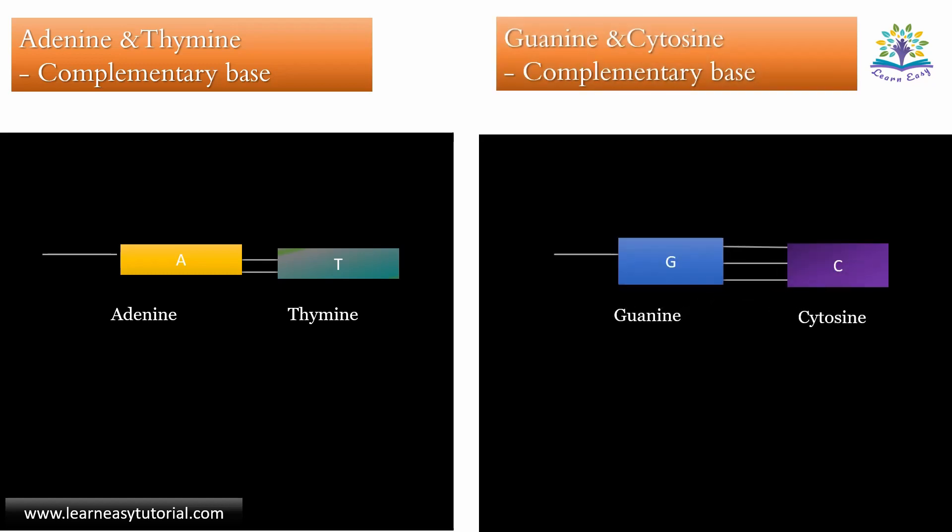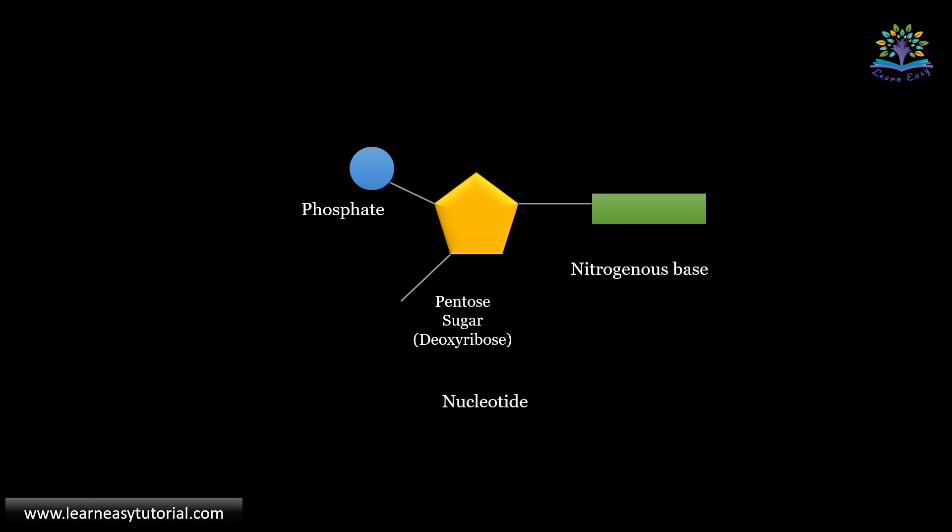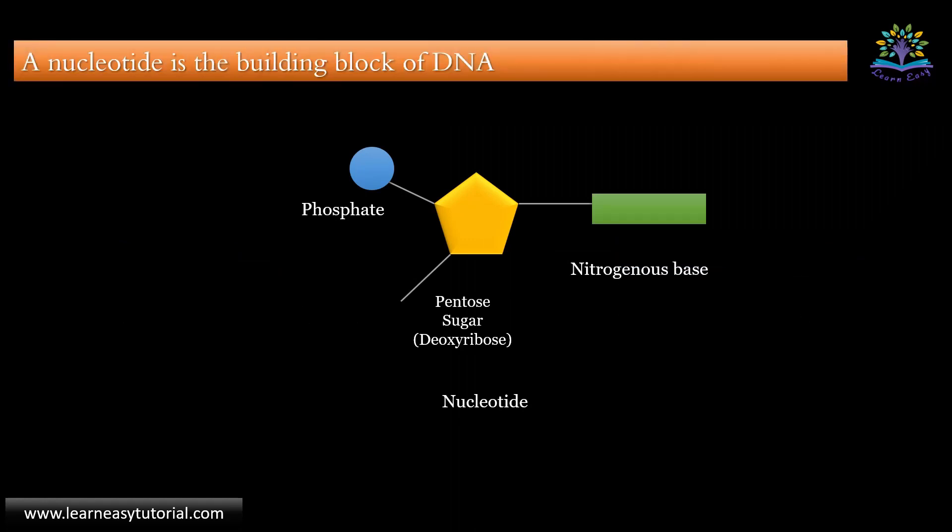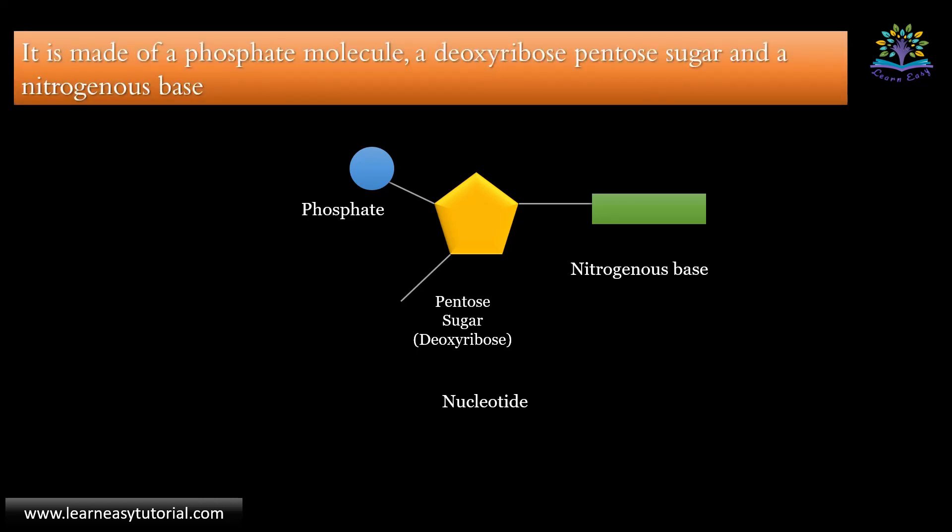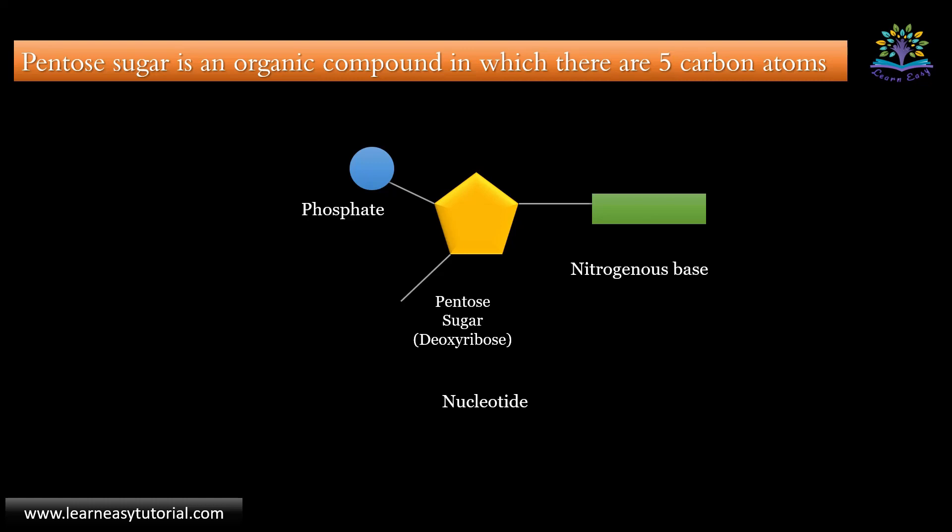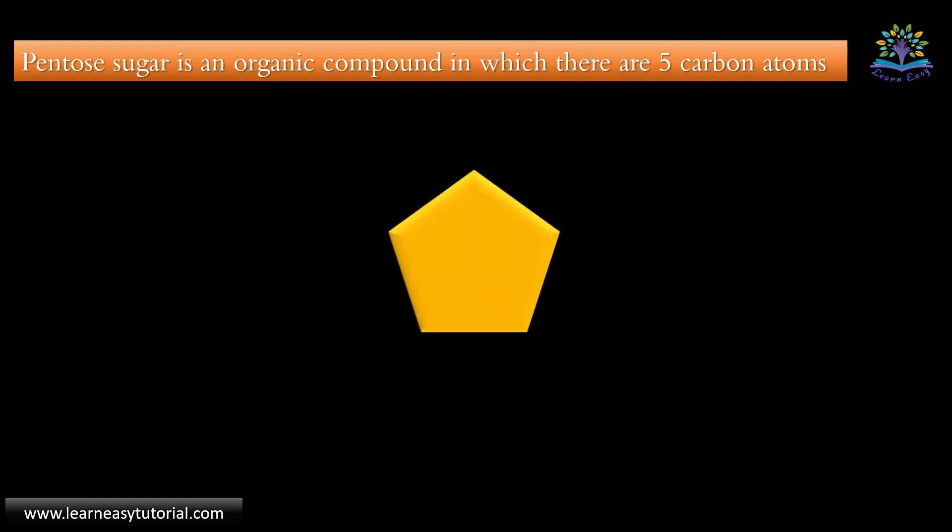We know that a nucleotide is the building block of DNA. It is made up of a phosphate molecule, a deoxyribose pentose sugar, and a nitrogenous base. This pentose sugar is an organic compound in which there are five carbon atoms.